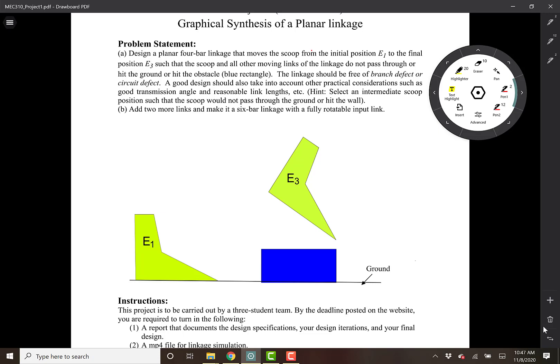There are different constraints on your design. First, you have to have reasonable link lengths. And when I say reasonable, I mean that the ratio of your largest to smallest link should not exceed 10 to 1. Furthermore, the mechanism should have good transmission angle.